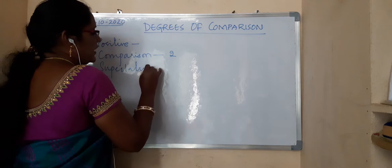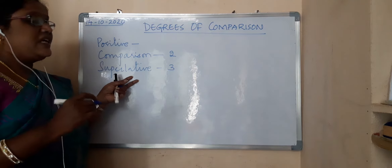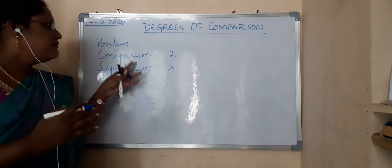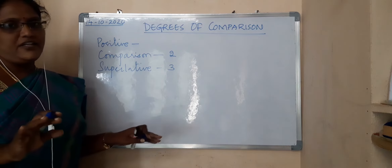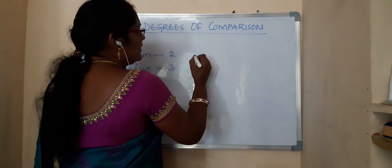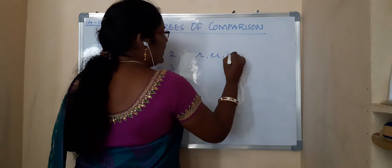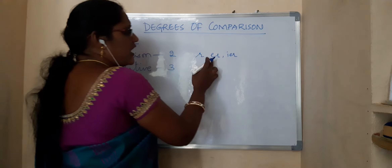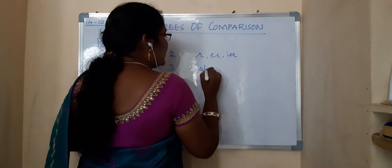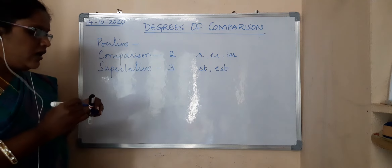In superlative, the comparison is made for more than 3. When it is only 2 it is comparative, and if no comparison is made then it is positive. In comparative, the word will end with R, E-R, or I-E-R. Whereas in superlative it will end with S-T or E-S-T.